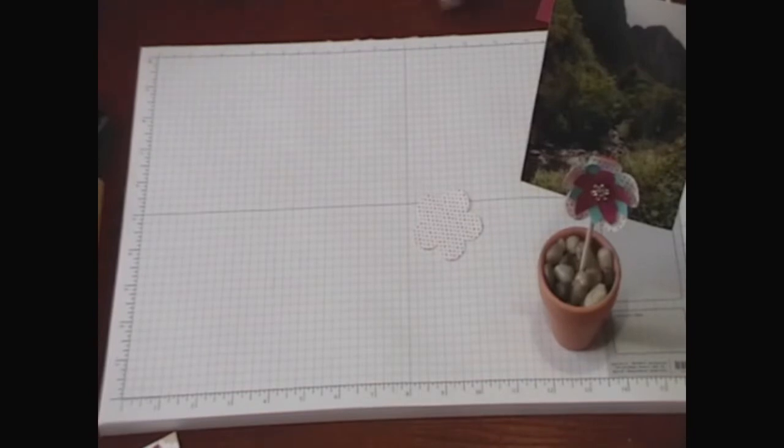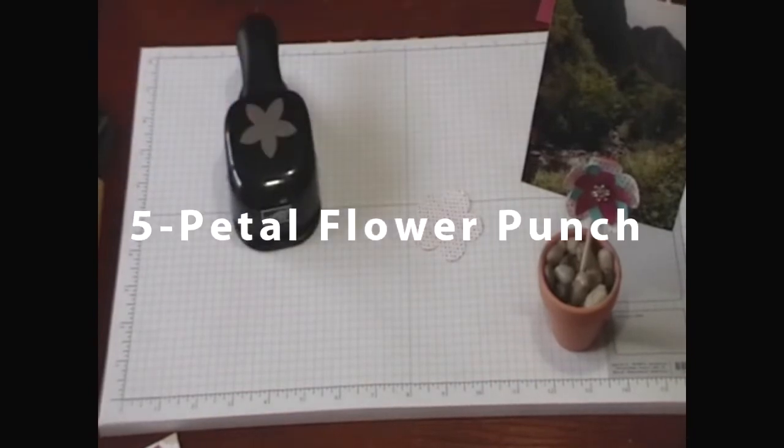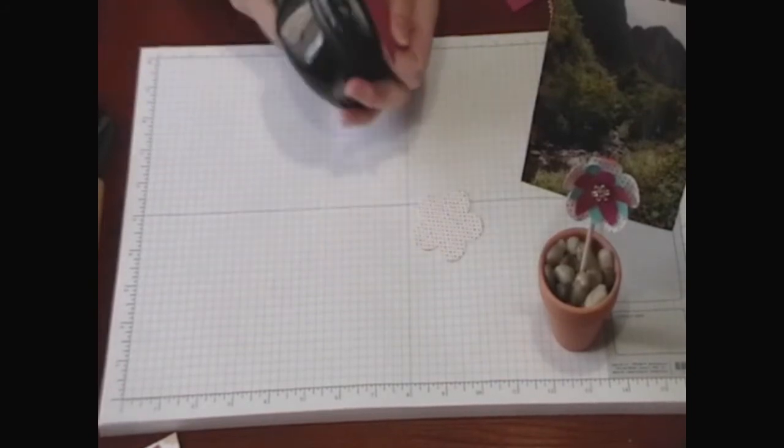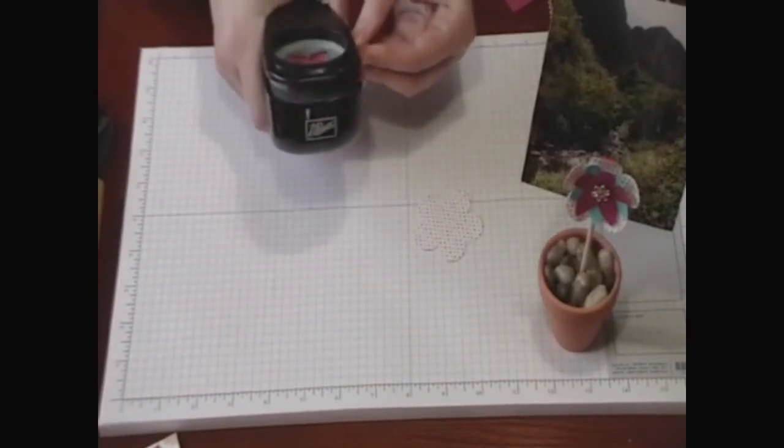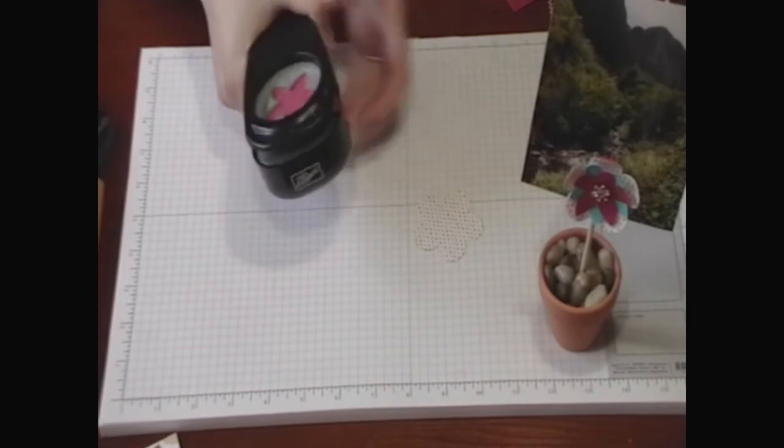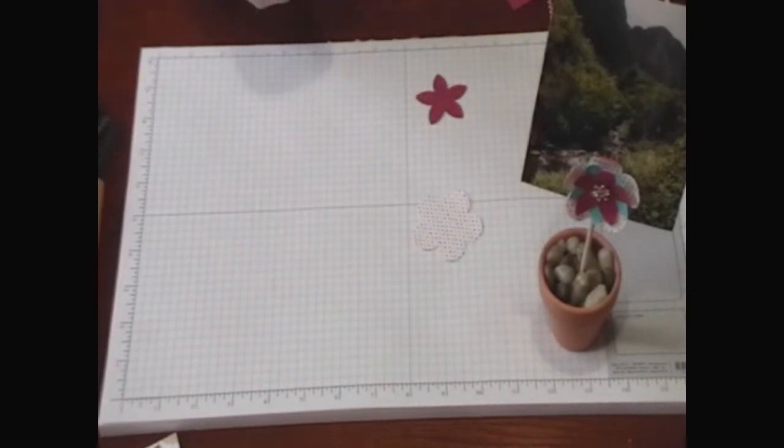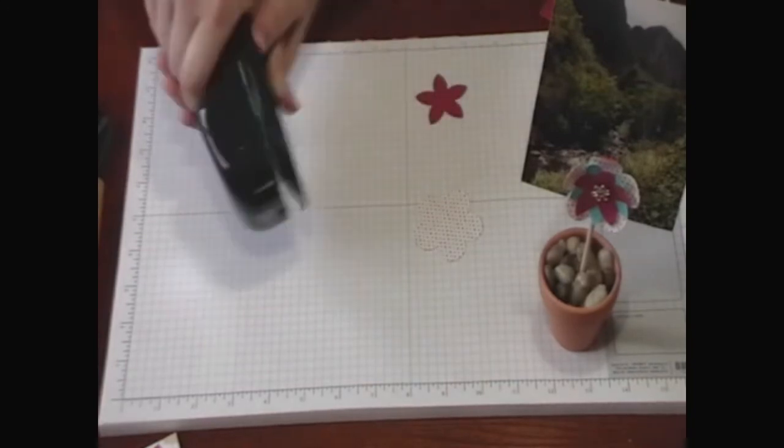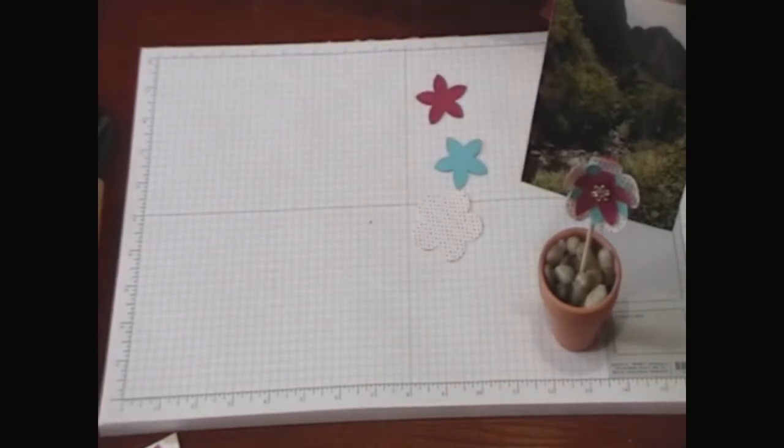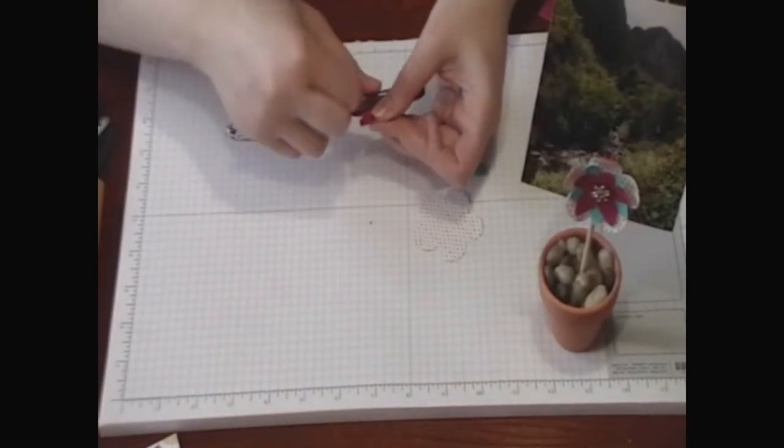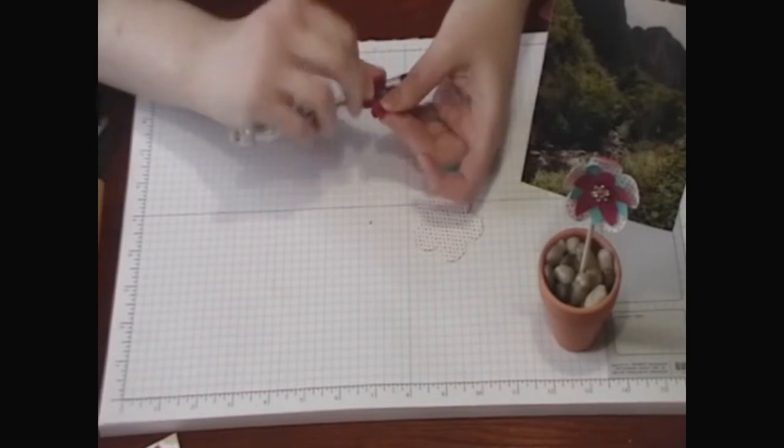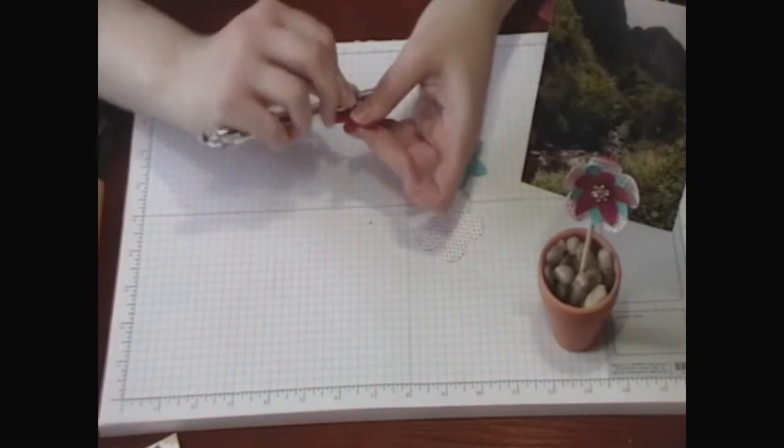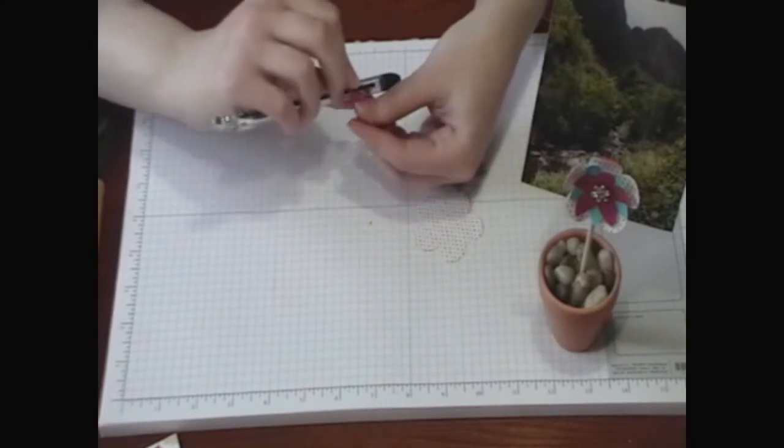Then I have our five petal flower punch and I'm going to punch one with rose red cardstock and one with tempting turquoise. Then I'm going to just use a pen and kind of curl up the edges of these petals.